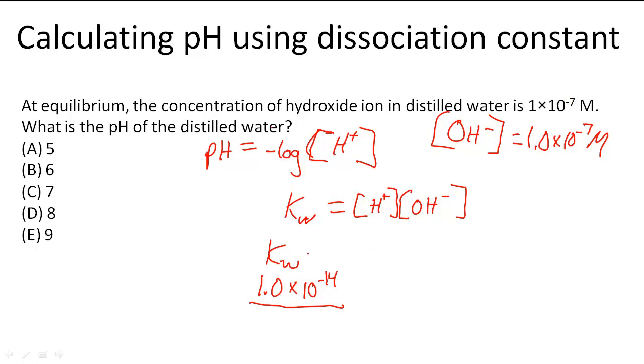We use Kw to solve this problem: 1.0 times 10 to the negative 7th molar, which is the concentration of OH negative, and we're going to get the concentration of H plus, which is actually 1.0 times 10 to the negative 7 molar.